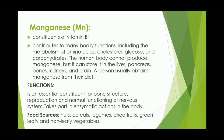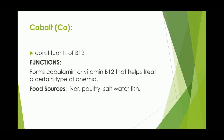Manganese is a constituent of vitamin B1 and contributes to bodily functions including metabolism of amino acids, cholesterol, glucose, and carbohydrates. The human body cannot produce manganese but can store it in the liver, pancreas, bones, kidneys, and brain; it is obtained from the diet. Functions: essential for bone structure, reproduction, and normal functioning of the nervous system; takes part in enzymatic action. Food sources: nuts, cereals, legumes, dried fruits, and green leafy and non-leafy vegetables. Cobalt is a constituent of vitamin B12. Functions: forms cobalamin (vitamin B12) that helps treat certain types of anemia. Food sources: liver, poultry, salt water, and fish.